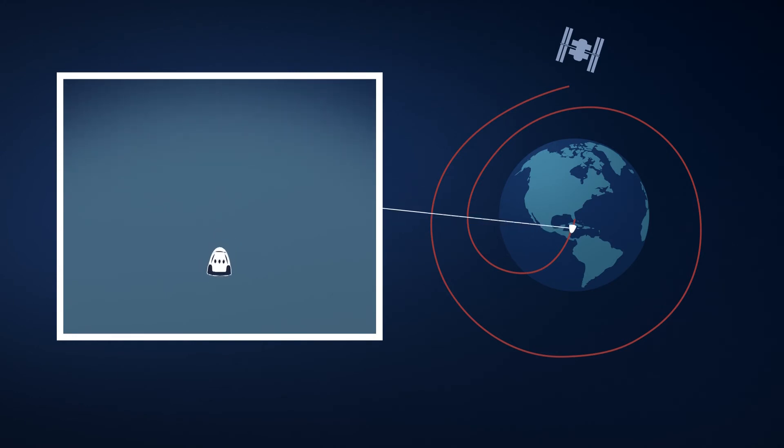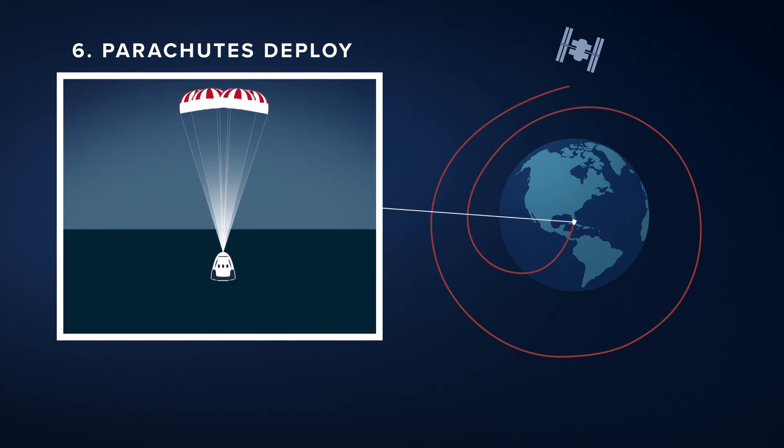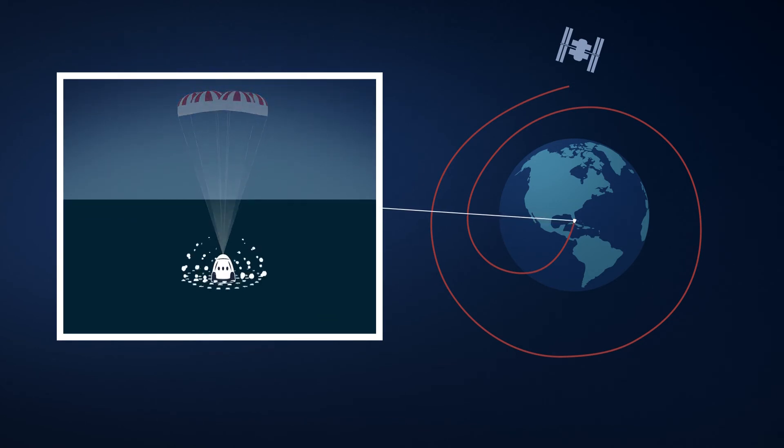After this fiery stage of reentry, four Mark III parachutes will deploy, doing the final part to slow Crew Dragon down ahead of a gentle splashdown somewhere off the coast of Florida.